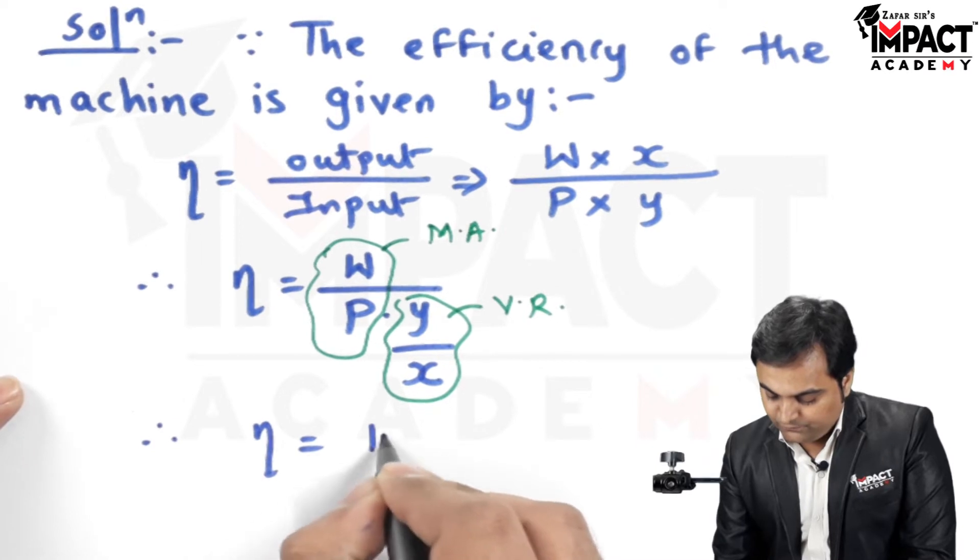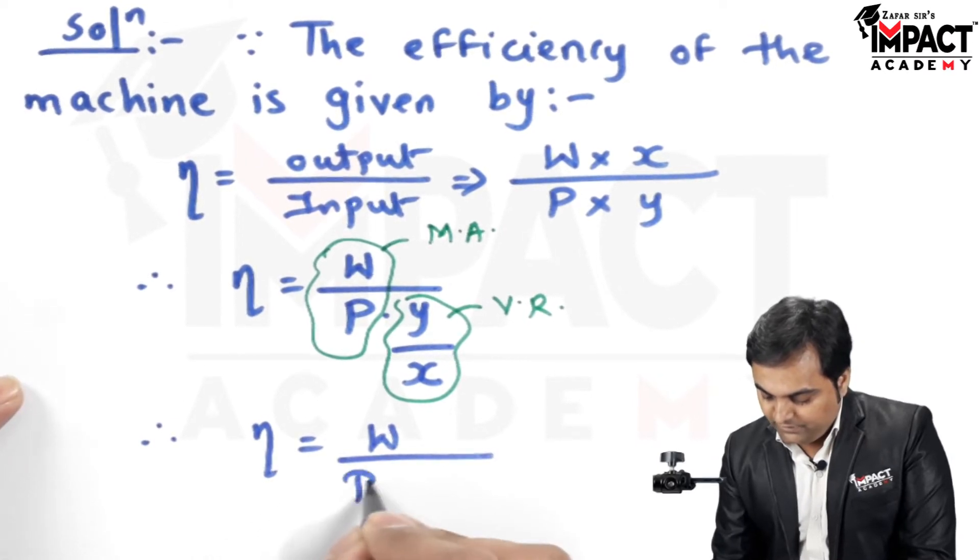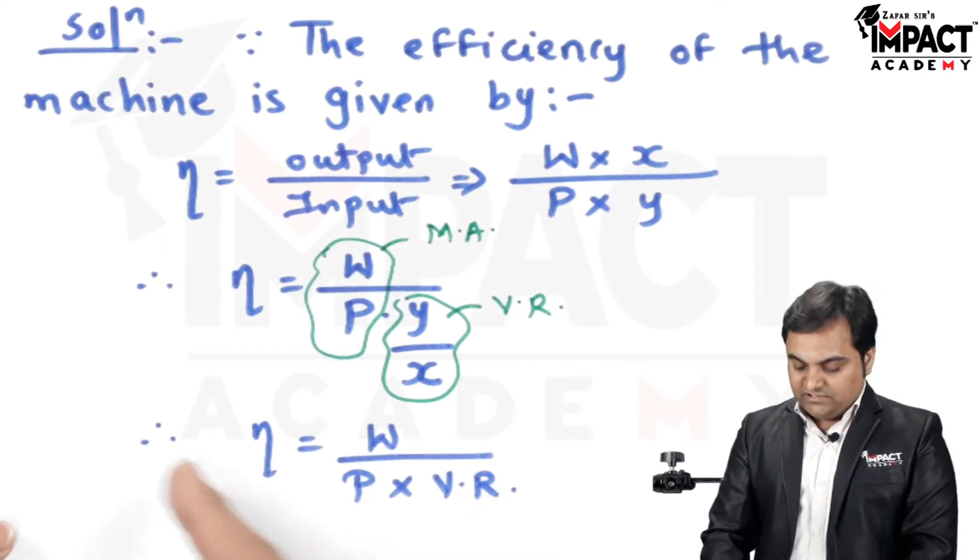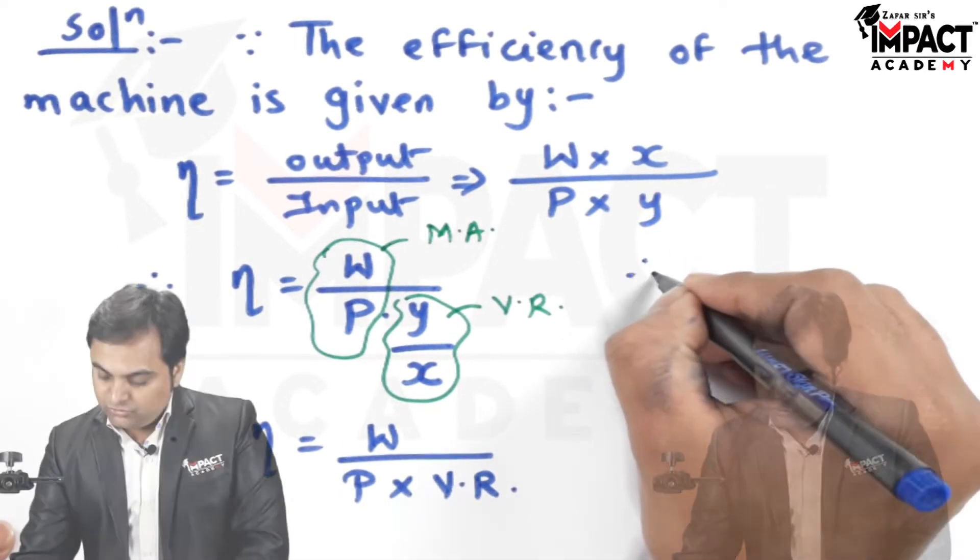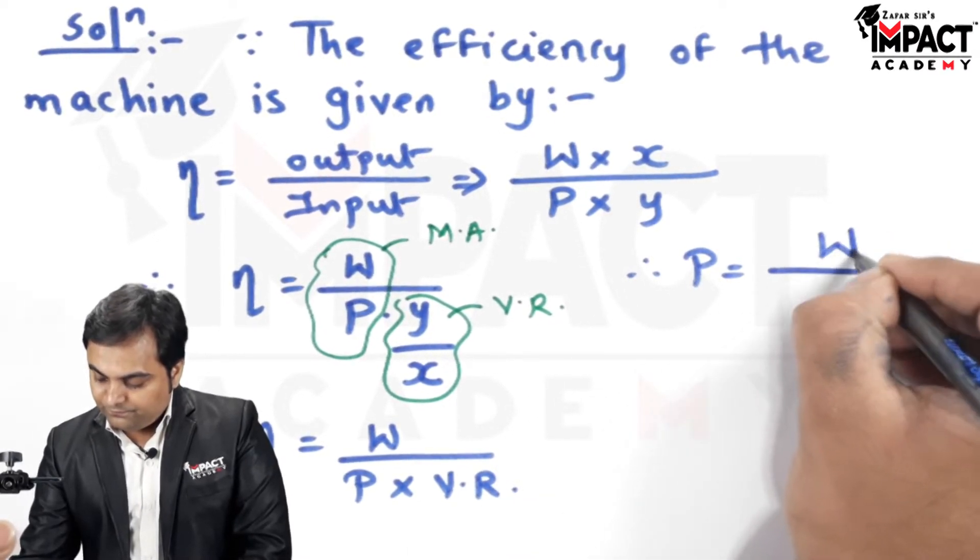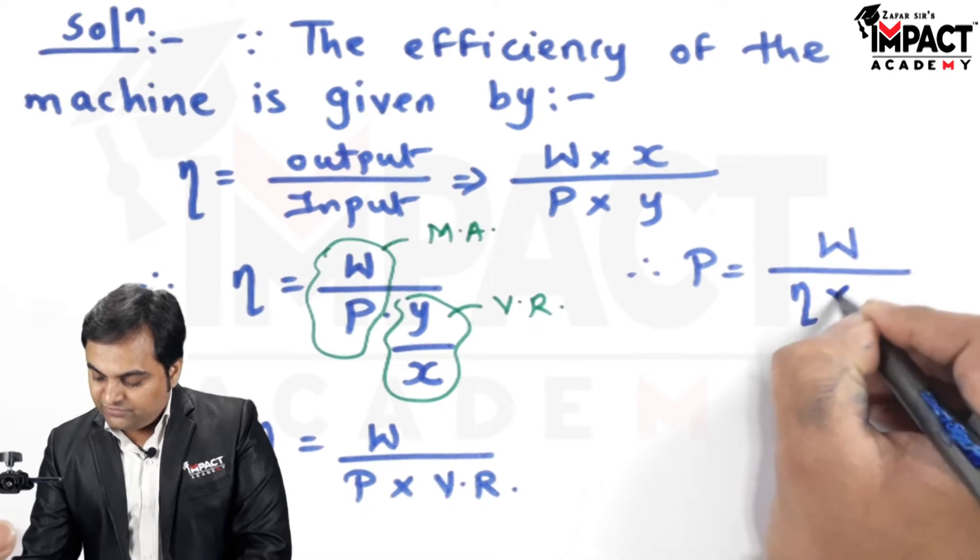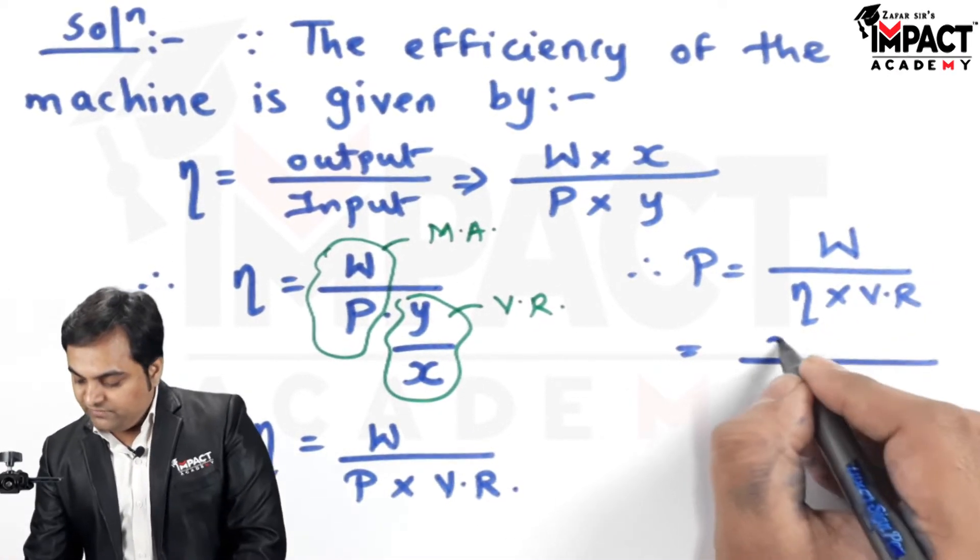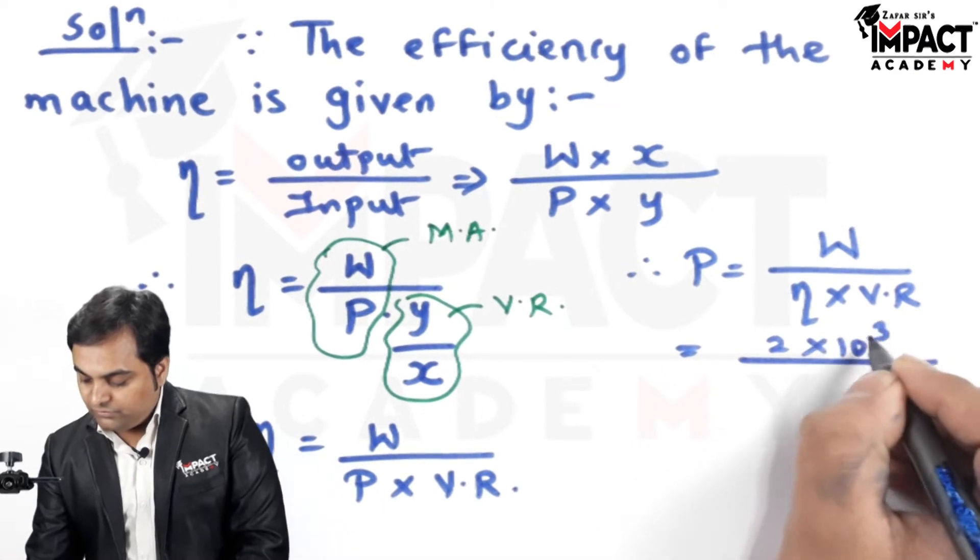Now since the effort P has been asked, I'll shift P onto the other side, so we have P is equal to W upon efficiency into VR. The load is given as 2 into 10 raised to 3 Newton.